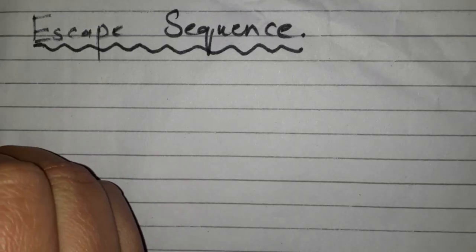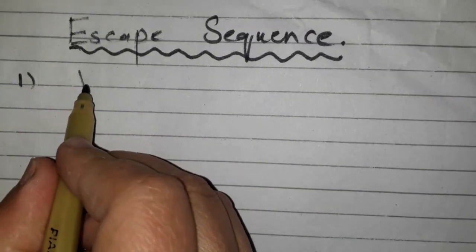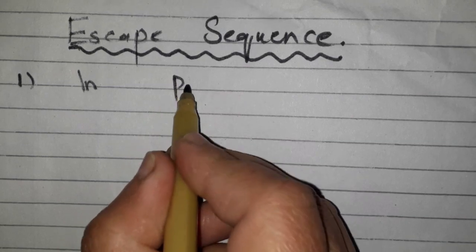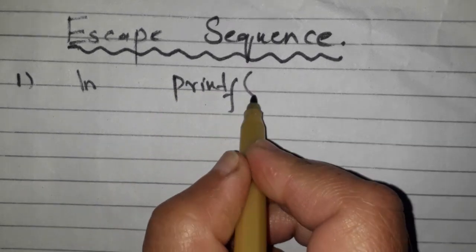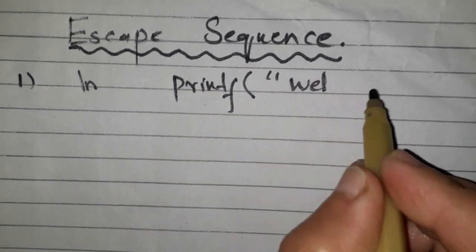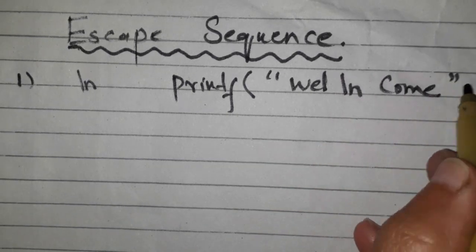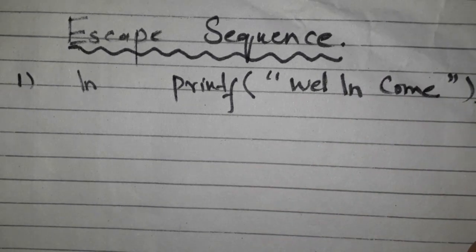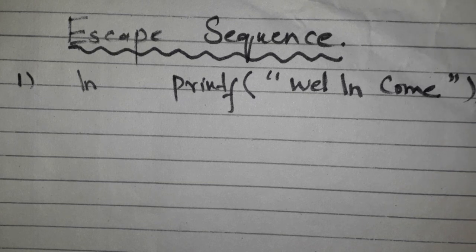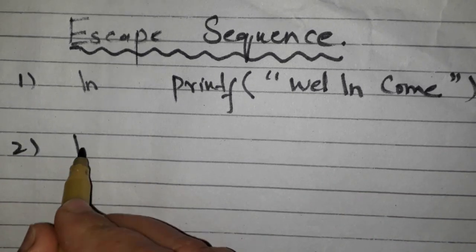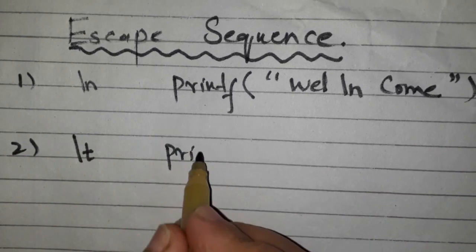Let's practice some common escape sequences. Backslash n, which is used to print a new line or add a new line in the output. Printf, which is an output function: well backslash n come. So well and come will be displayed on two separate lines.